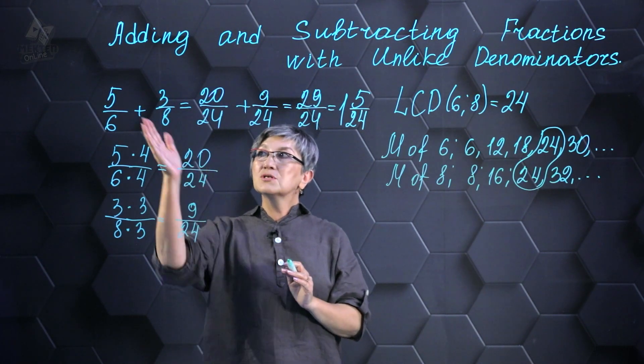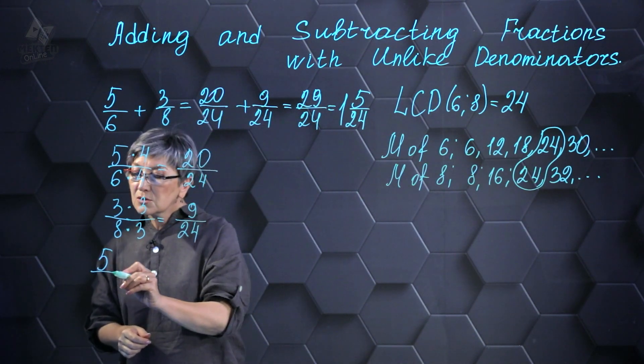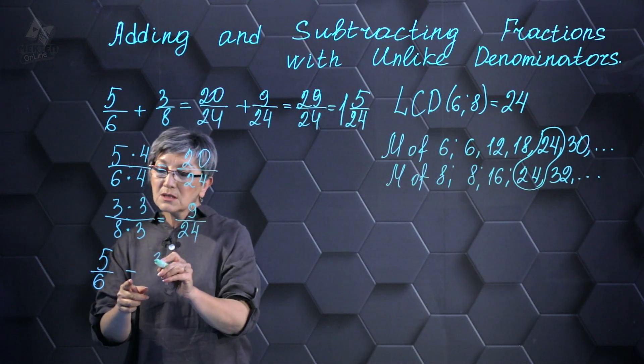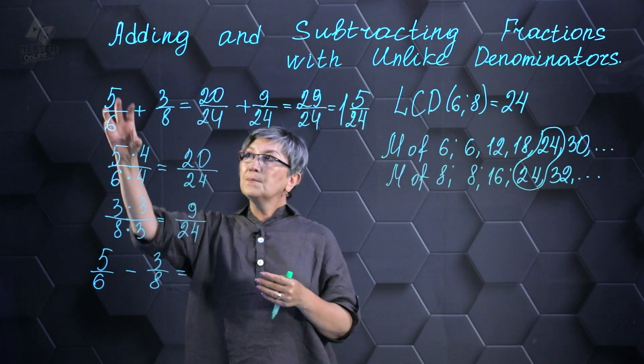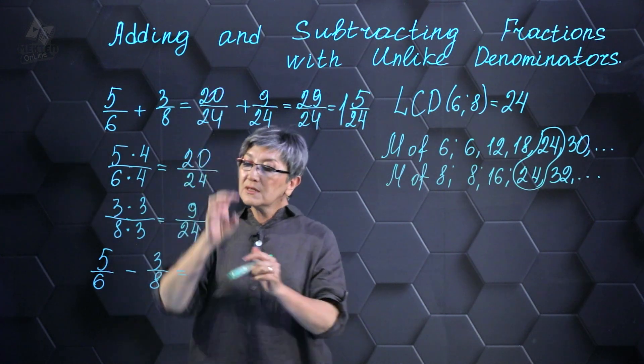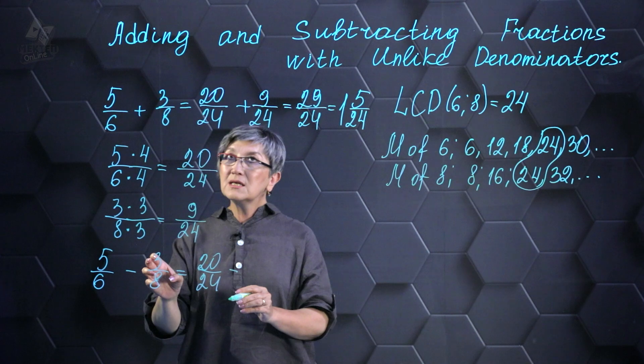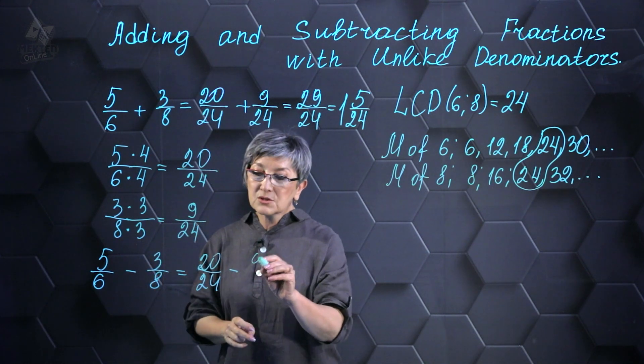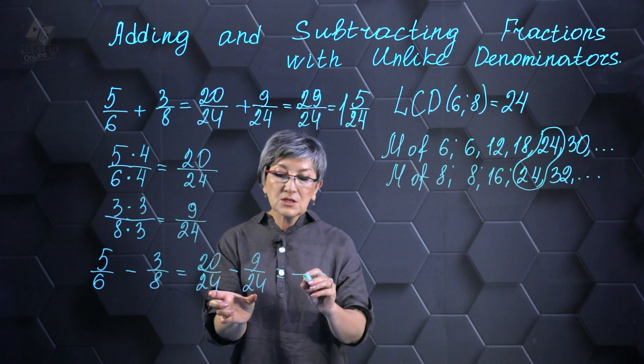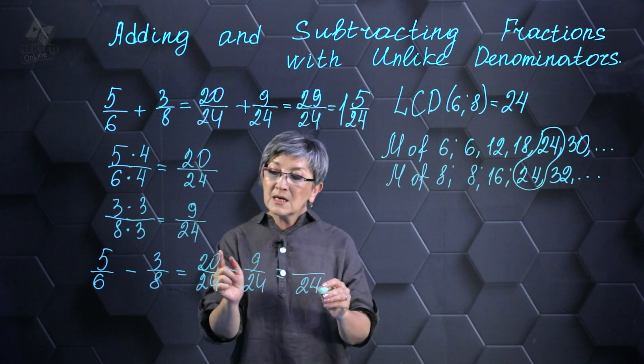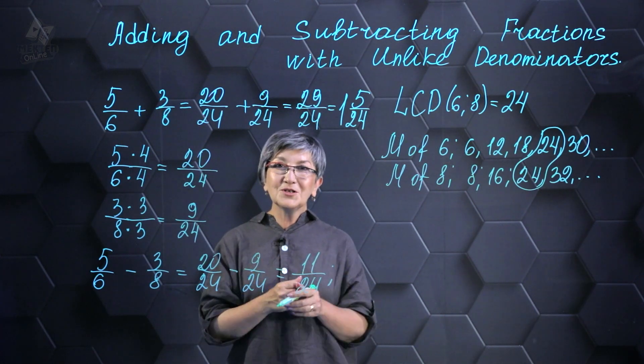I can perform the same action when I subtract numbers. So, subtracting 3 eighths from 5 sixths gives us 20/24. And subtracting 3 eighths from 20/24. We have already done this calculation with you. And the final result is 9/24. And as a result, we have 24. We correct it and subtract 9 from 20, which will be 11. And that will be our answer.